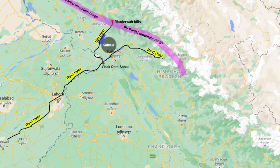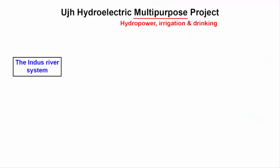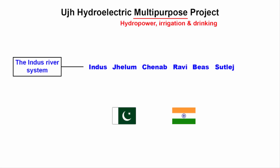River Uj is a tributary of Ravi, which is part of the Indus river system. The Indus river system comprises the rivers Indus, Jhelum, Chenab, Ravi, Beas, and Sutlej. All these rivers are shared by both India and Pakistan, with a small share for China and Afghanistan.